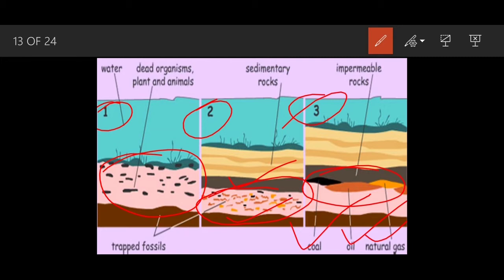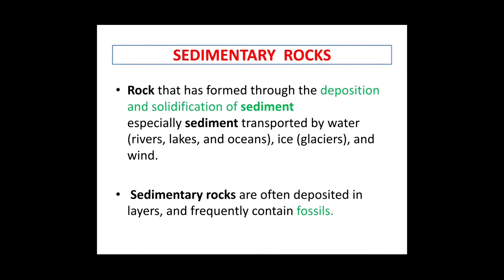We take petroleum to oil refineries and refine it. Petroleum is actually very thick and is refined in the factories and oil refineries. It is then turned into petrol, diesel, kerosene, petroleum jelly, and more. This is how fossil fuels are formed.